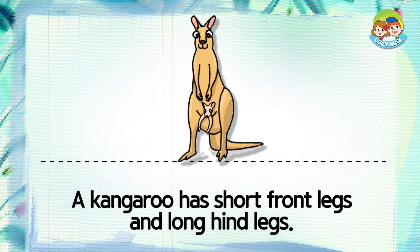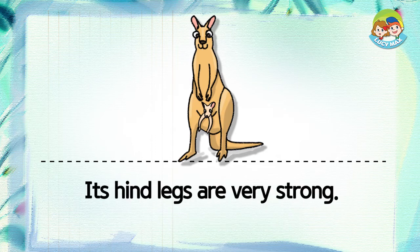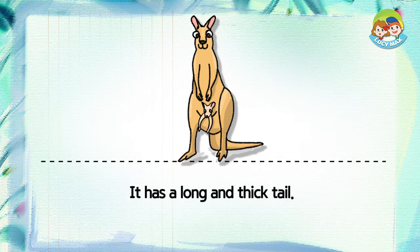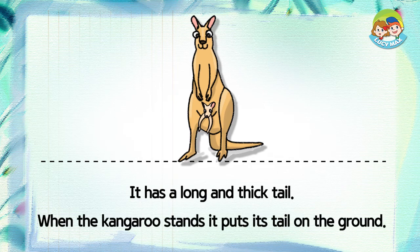A kangaroo has short front legs and long hind legs. Its hind legs are very strong — it can jump more than ten meters. It has a long and thick tail. When the kangaroo stands, it puts its tail on the ground.